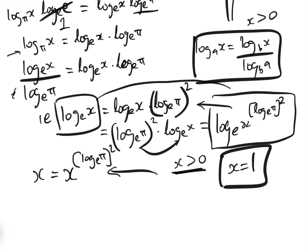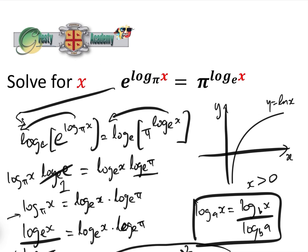And that is the only solution. Let's verify by plugging in x equals 1. Well, log of 1 is 0 to any base, and e to the 0 is 1, so the left side gives 1. And on the right, log of 1 is 0 and pi to the 0 is 1. Indeed 1 equals 1, so x equals 1 is a solution.